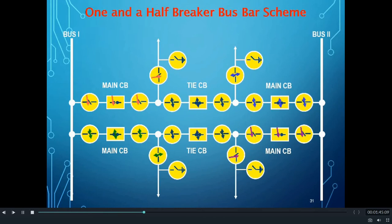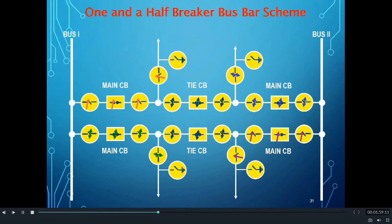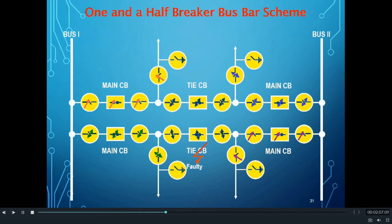All circuit breakers and isolators are shown and all are in service. From the figure you can see all feeders are connected to both buses through main and tie circuit breakers. Now we will see how this busbar scheme behaves when there is a fault — we have created a fault in the tie CB.